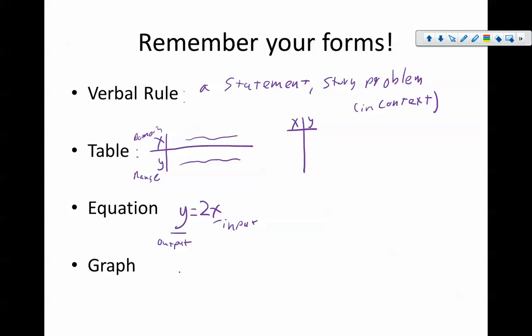And then, finally, what we're going to review today would be a graph. And a graph would be something that looks like this, that has an X axis, and it has a Y axis. And that each of these axes have points that we can find. And that a point would be something that is both an X and a Y value.